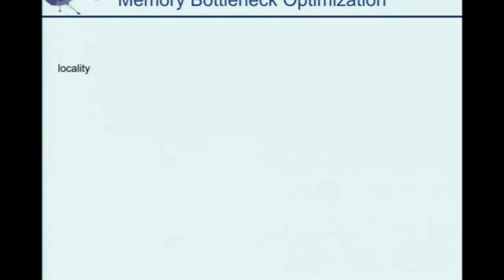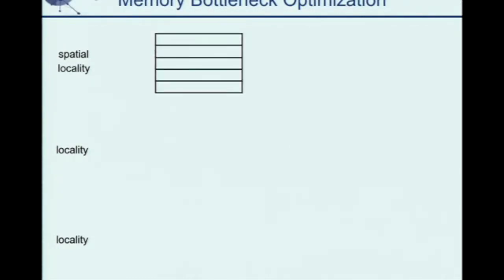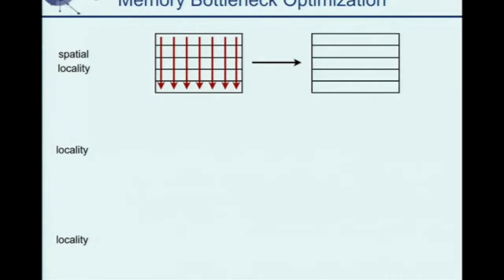The main point is that we want to avoid any memory bottlenecks in the program. There are three types of data locality. The first is spatial data locality. Think of a cache with five cache lines — if we reference data across cache lines, every access will get a cache miss. That's a bad access pattern. We can change the access pattern to unit stride, which largely reduces cache misses.